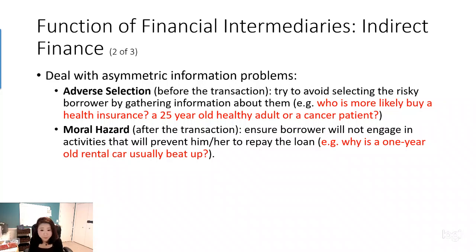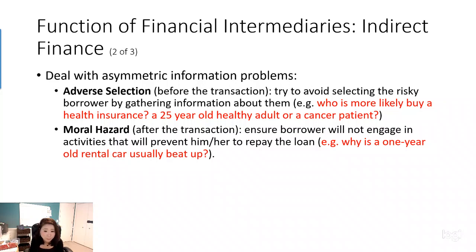For moral hazard, think about why a one-year-old rental car is usually beaten up. When you rent a car, it's charged based on the number of days you rent it. So people who rent cars tend to drive a lot, which is why a brand-new one-year-old rental car may already have high mileage. After the rental place rents the car out, they can only control the money they charge; they cannot control how many miles the renter drives because the contract rate is based on days, not mileage. This is called moral hazard — after the transaction happens, the rental place has no control over how you use the car.